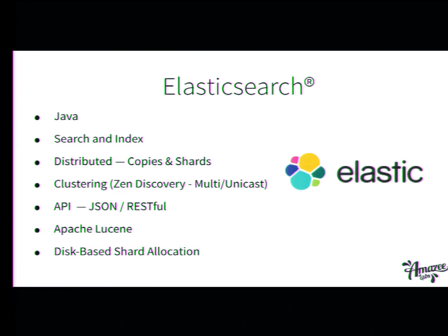Elasticsearch can be called over a JSON API — it has a really good REST interface, so you can do everything over code requests and automate a lot of things like failovers. The indexing part is done by the Apache Lucene project. One interesting thing you should be aware of: it does disk-based shard allocation. If you have more than one server, it always tries to move data to the server which has the least disk used, to save you from under-provisioning your disks.